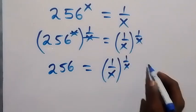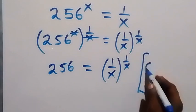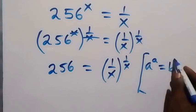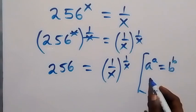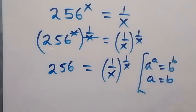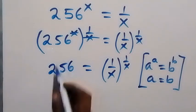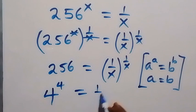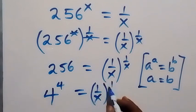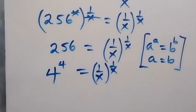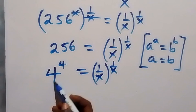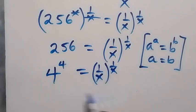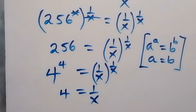So we have 256 equals 1 over x raised to the power of 1 over x. From the law of indices, when we have L to the power of a equals b to the power of b, this gives us a equals b. Applying that here, we can express 256 as 4 raised to the power of 4, which equals 1 over x raised to the power of 1 over x. This follows the pattern: base same as the power.